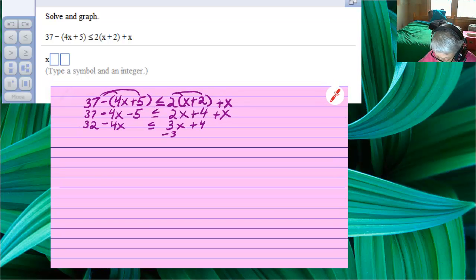Now, I'm going to subtract 3x from both sides of the inequality. That will give me 32 minus 7x, and it's very easy to make a mistake here. Remember that minus 4x minus 3x is really negative 4x plus negative 3x, which is negative 7x. That's less than or equal to 3x minus 3x gives you a 0, and you bring down the 4.